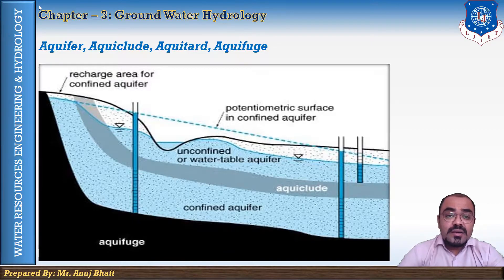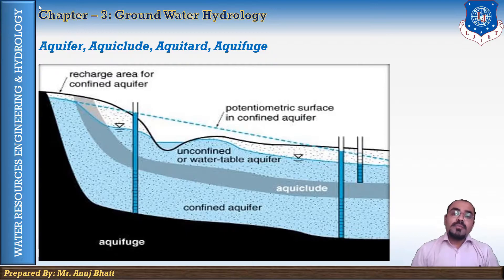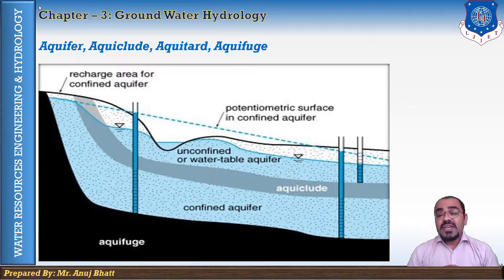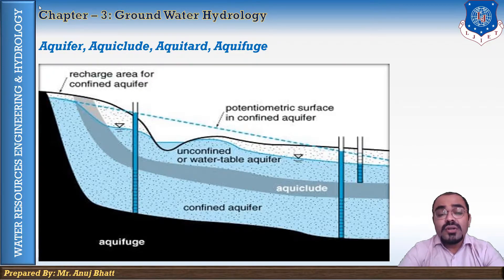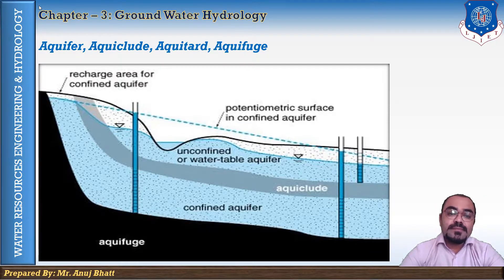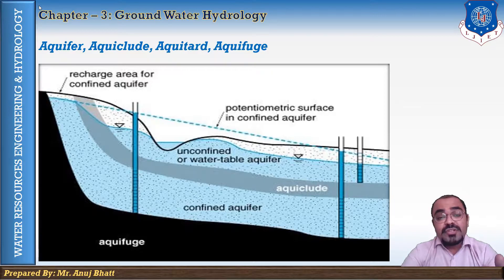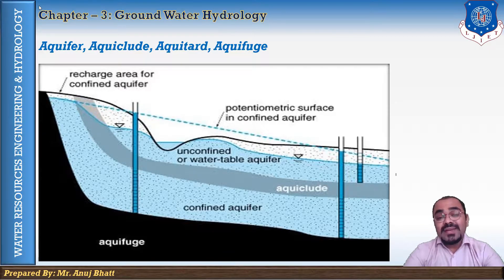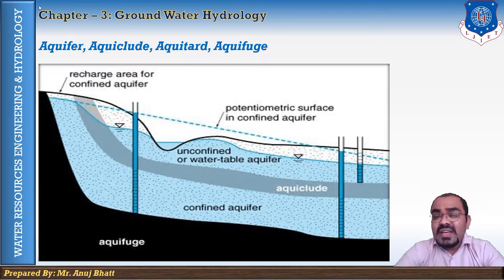The aquitard is a geological formation that has poor permeability but through which seepage is possible, and hence it does not yield water freely to wells. It may transmit vertically appreciable quantities of water to or from adjacent aquifers.